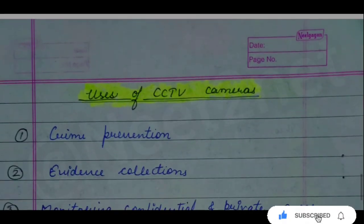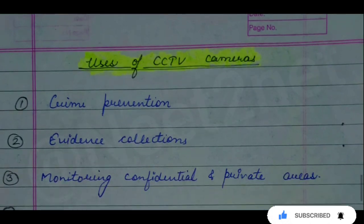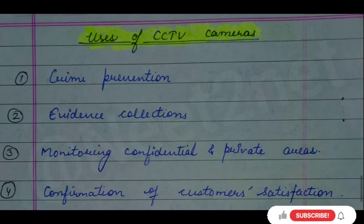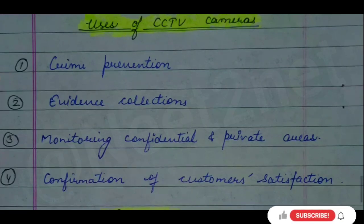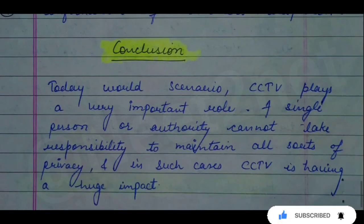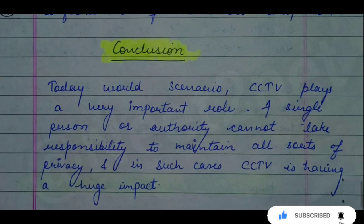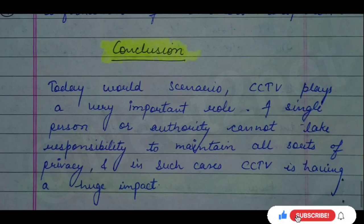CCTV cameras are used to stop crime, collect evidence, and monitor private or confidential areas. In today's world, CCTV is very important. A single person or authority cannot be responsible for maintaining privacy and monitoring so many things effectively — so CCTV has a huge impact and use. That's all about CCTV cameras. If you have understood, then like this video and subscribe to the channel. We'll see you in the next video. Goodbye.